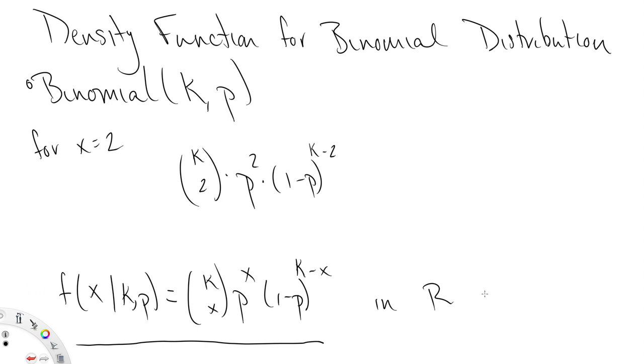In R, this corresponds to dbinom. So in R, there is a function named dbinom. That is the density function of the binomial distribution, and it does this calculation for you, for any k, p, and x.